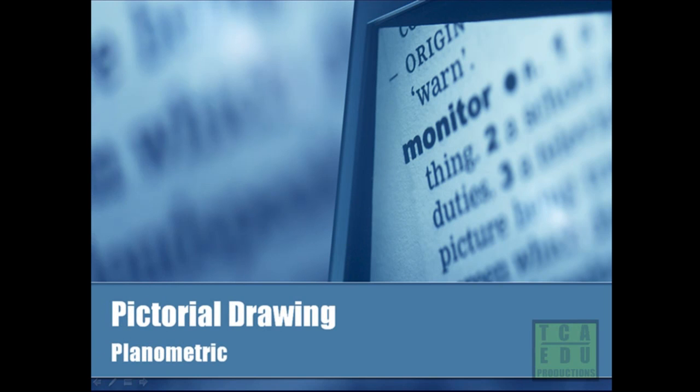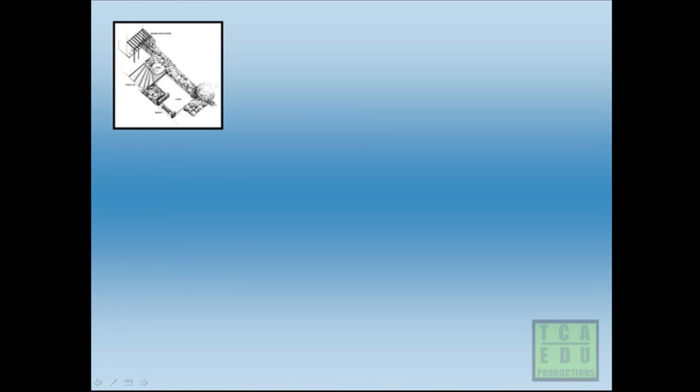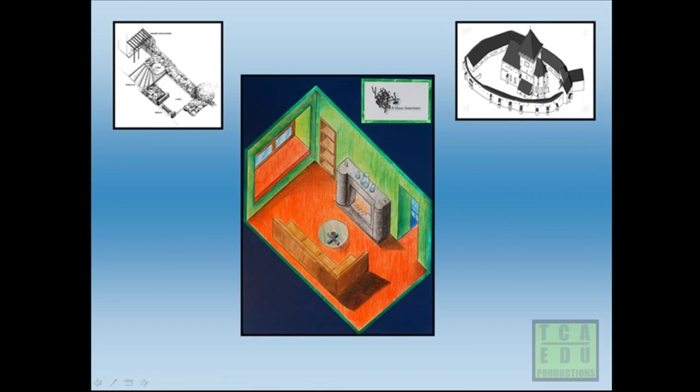The next type of pictorial drawing we are going to look at is planometric, also known as axonometric. Planometric drawings will usually either show the outside landscape of a garden or the interior view of a room.